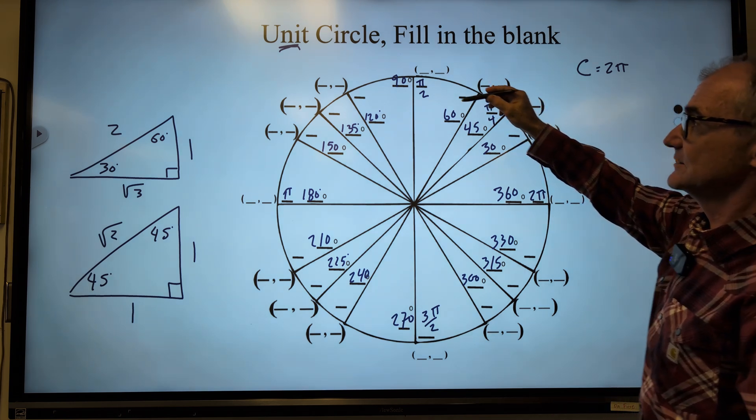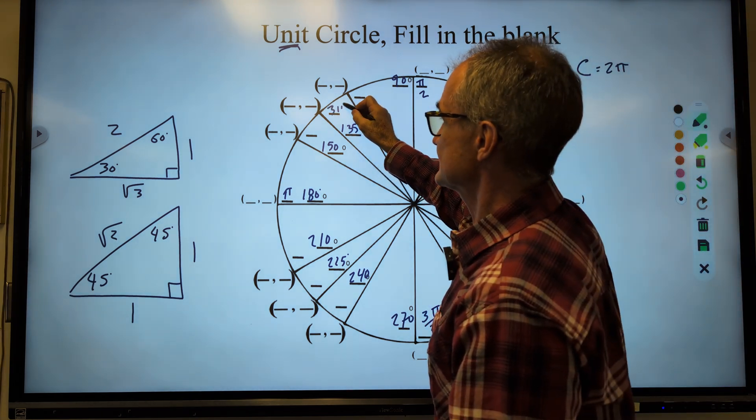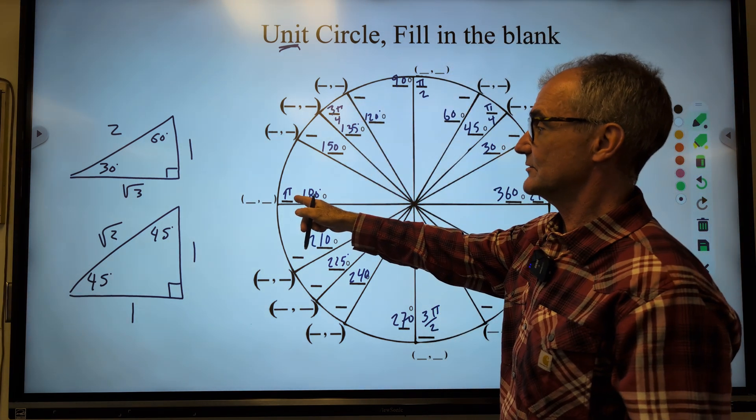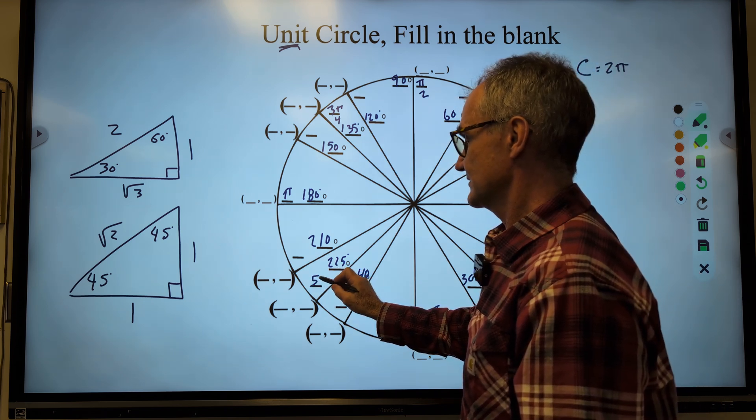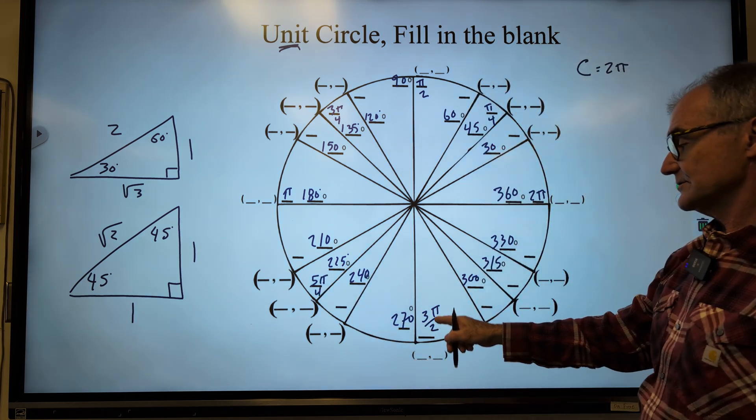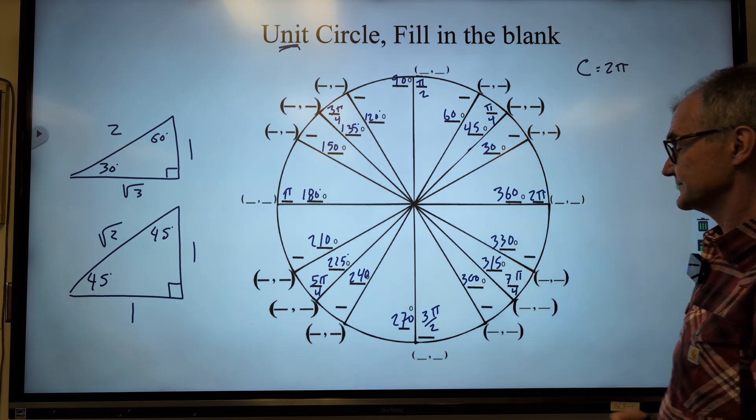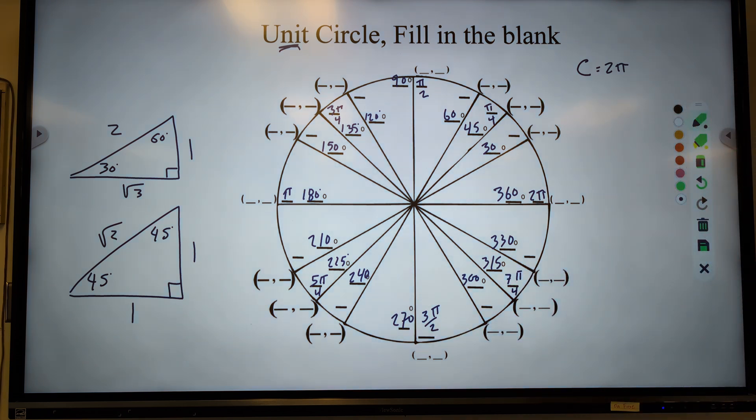So this is now 1 fourth, pi over 4. 1 fourth, 2 fourths, 3 fourths, and then that's 4 fourths. This is going to be 5 fourths, 6 fourths reduced, and then 7 fourths. So now I have all my 45s.